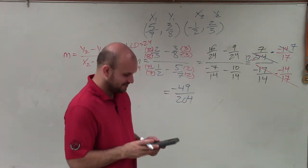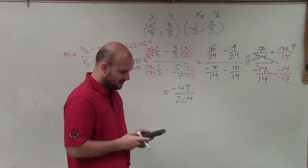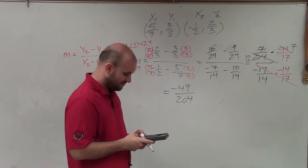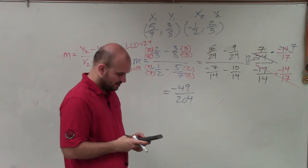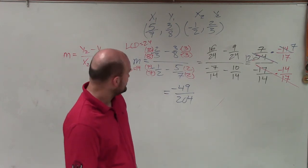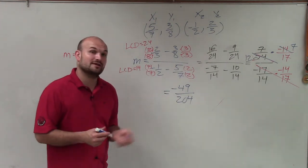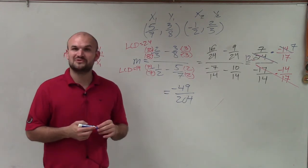Then, again, I could also spend time seeing if I want to do that, see if I can reduce that. 49 divided by 204. And that is going to be in its simplest form. So there you go, ladies and gentlemen. That is the slope for those two points. Thanks.